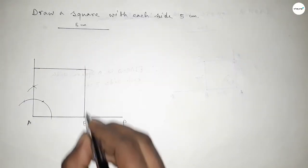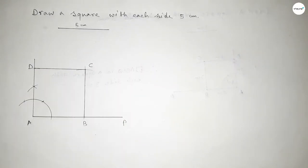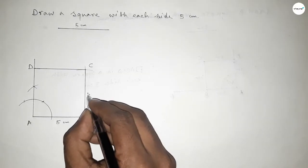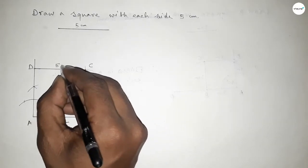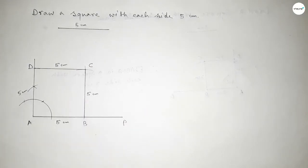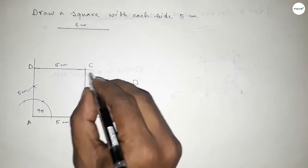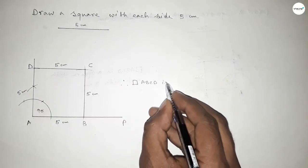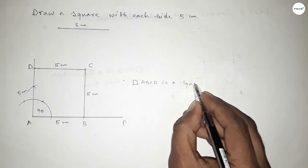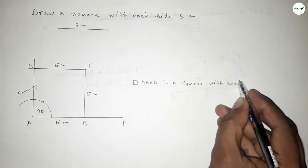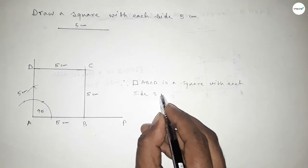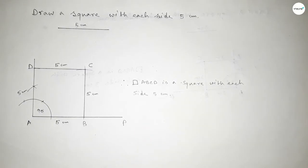Now this is point B, this is point C, and this is point D. Each side is 5 centimeters, and each angle is 90 degrees. Therefore rectangle ABCD is a square with each side 5 centimeters. This is the process to construct a square with each side 5 centimeters.